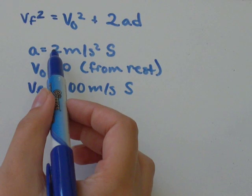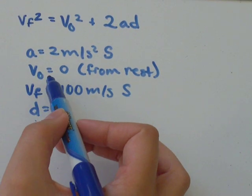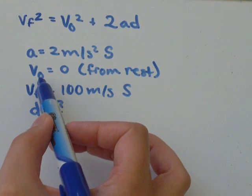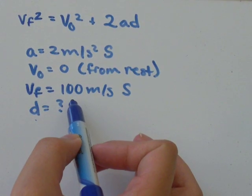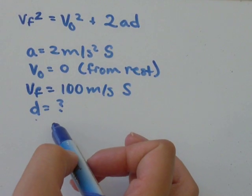So we're given acceleration. When it says that it accelerates from rest, that means the initial velocity is equal to 0. The final velocity, we were given that, and we're asked to solve for displacement.